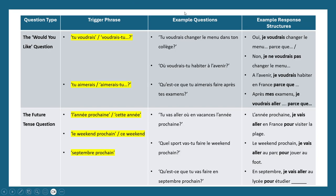Here are some example 'would you like' questions: 'Tu voudrais changer le menu dans ton collège?' — Would you like to change the menu in your school? 'Où voudrais-tu habiter à l'avenir?' — Where would you like to live in the future? 'Qu'est-ce que tu aimerais faire après tes examens?' — What would you like to do after your exams? For the response structure, if you get a 'would you like' question, answer with 'Je voudrais changer le menu parce que...' — Yes, I would like to change the menu because... — and give a reason.